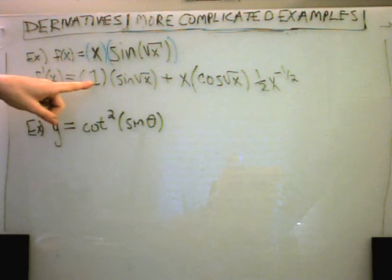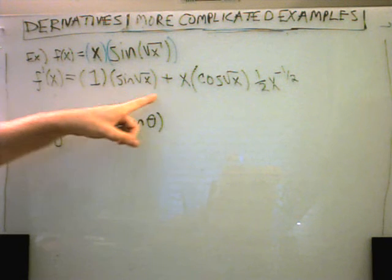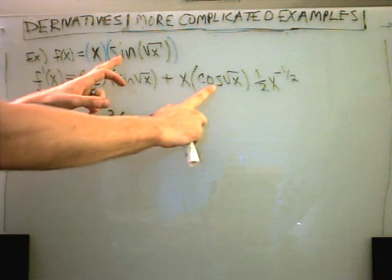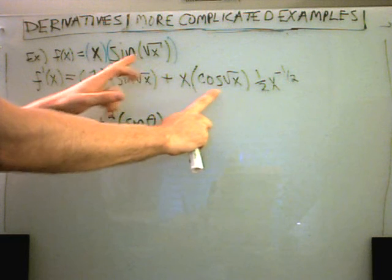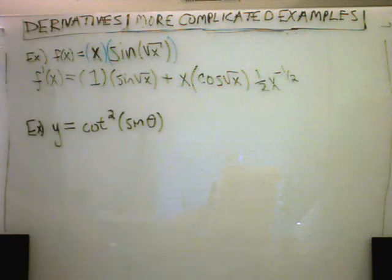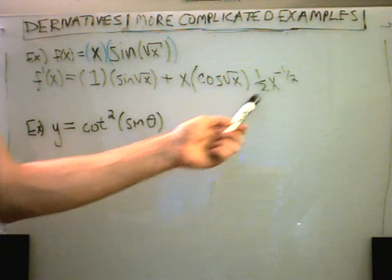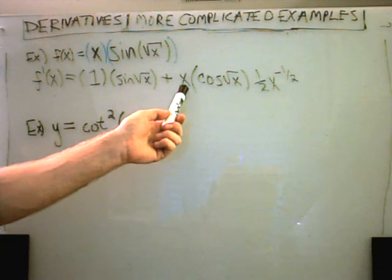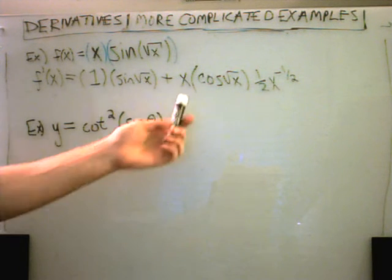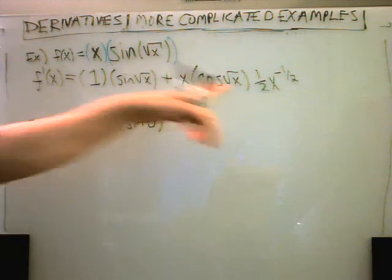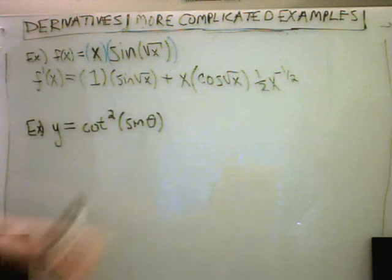So the derivative of x is 1, I left sine of square root of x alone, put my plus in between, left x alone, took the derivative from the outside in — derivative of sine is cosine — left square root of x alone, and the derivative of square root of x is one-half x to the negative one-half. You could simplify by pulling the one-half out front, and combining x and x to the negative one-half — same base, add exponents — giving one-half x to the one-half, leaving that cosine term alone.